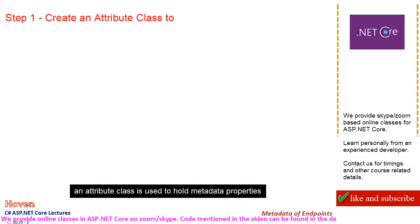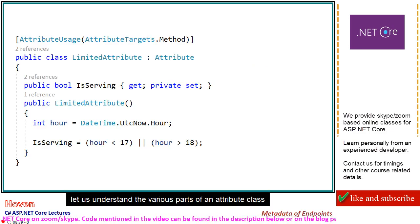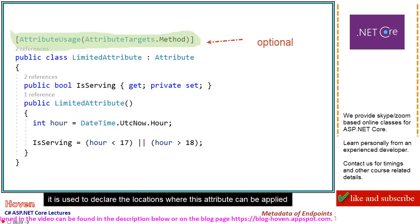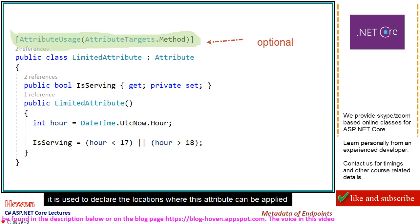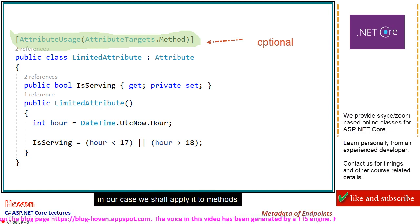An attribute class is used to hold metadata properties. Let us understand the various parts of an attribute class. AttributeUsage is an optional item. It is used to declare the locations where this attribute can be applied. One location is a method, another is a class, and so on. In our case, we shall apply it to methods.